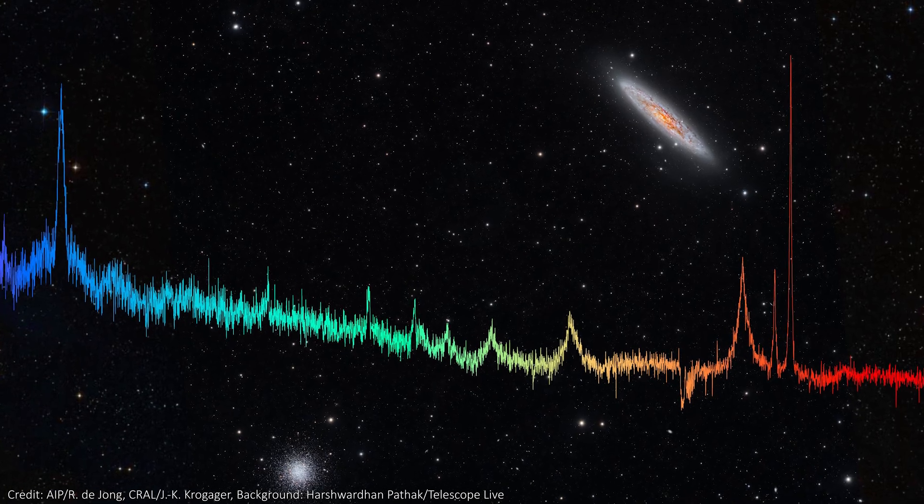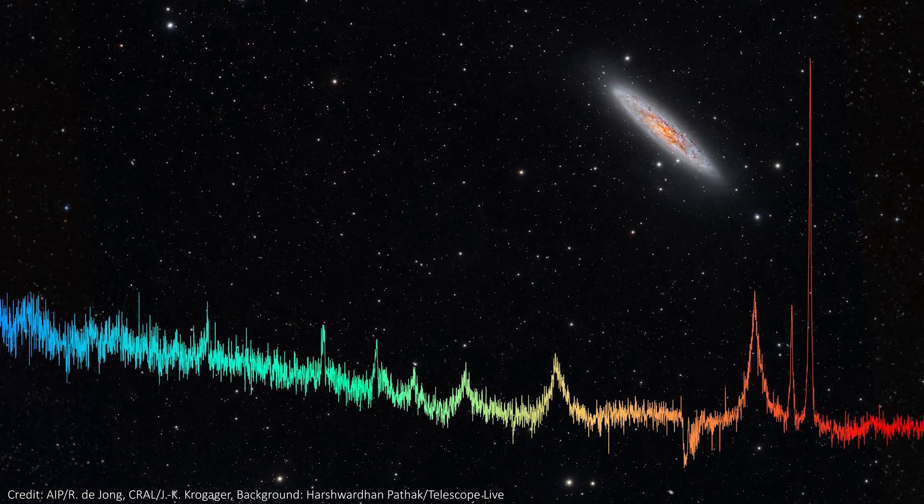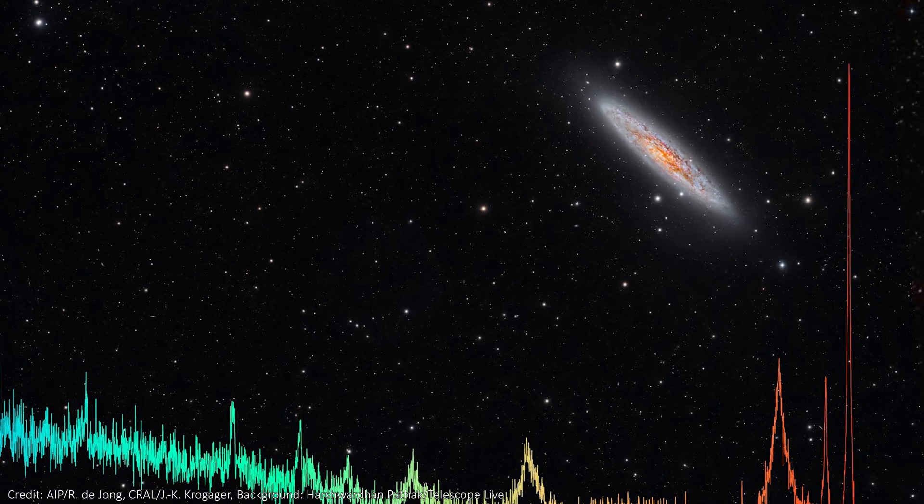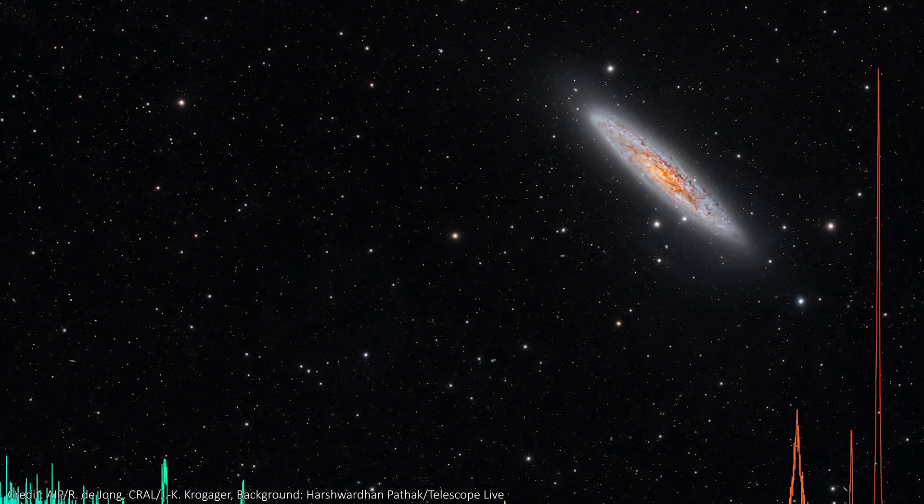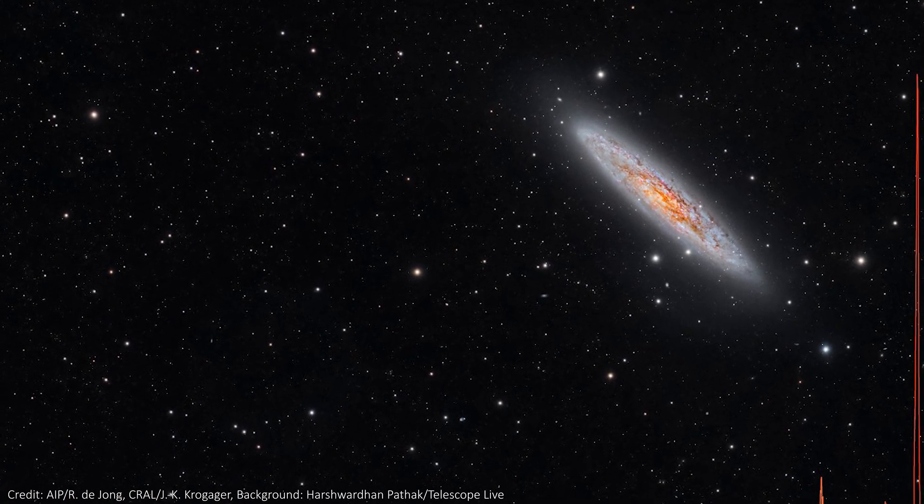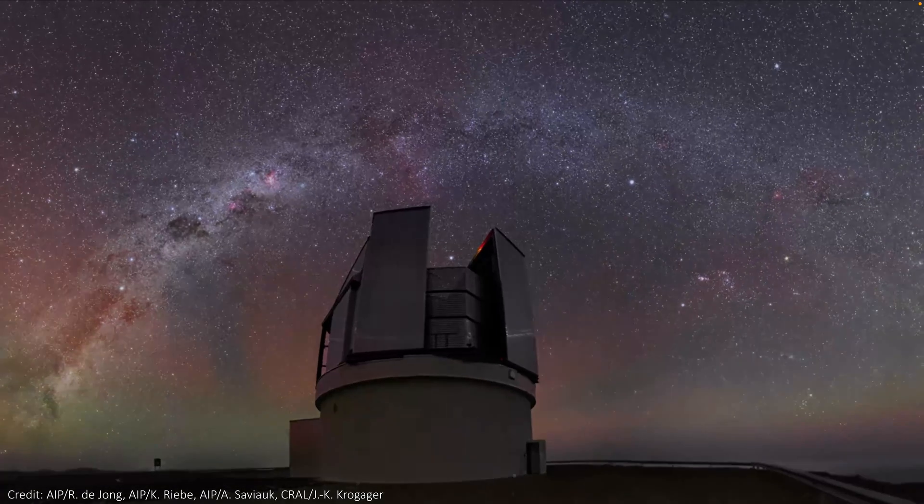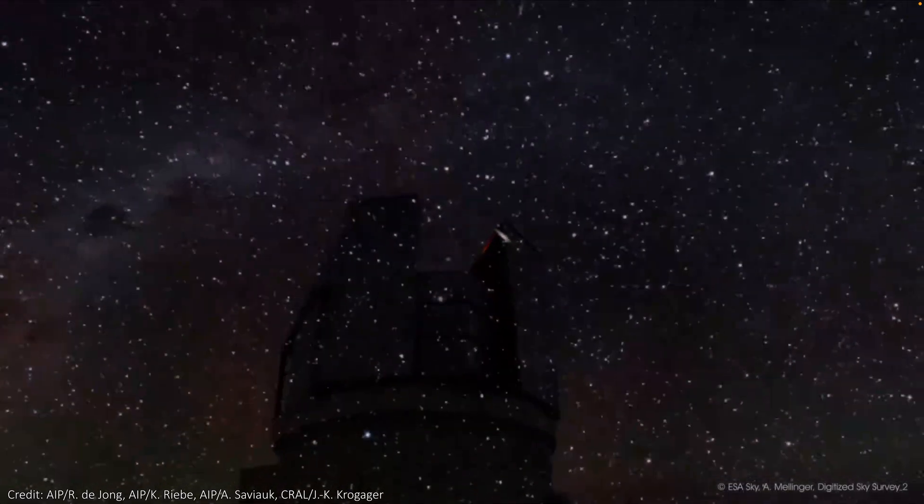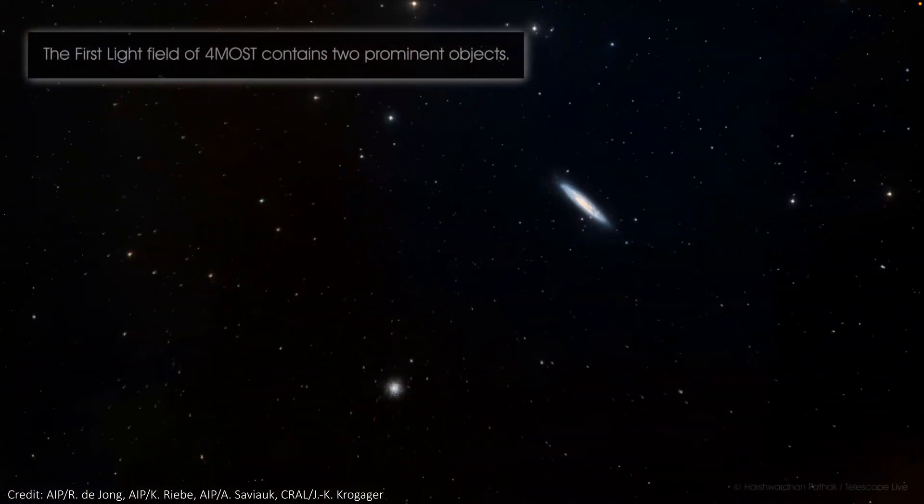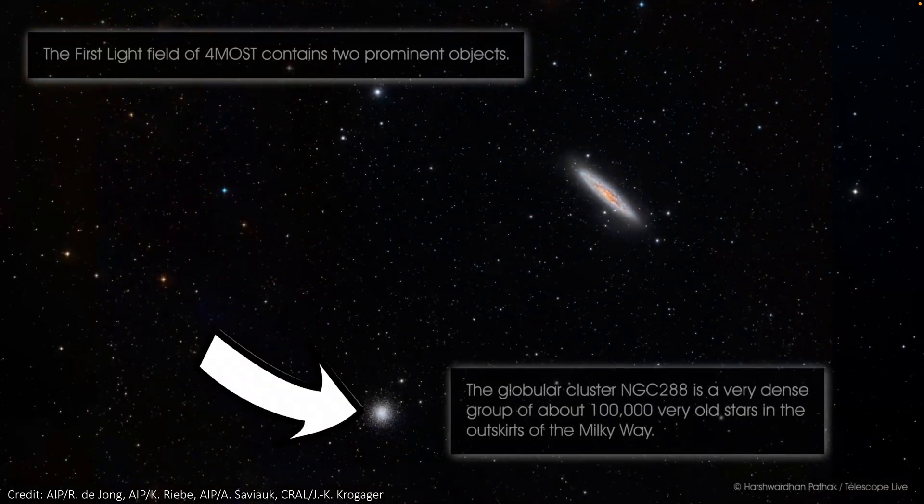This patch was chosen because it contains this really big galaxy called NGC 253, or the Sculptor Galaxy, which, except for the Magellanic clouds that orbit the Milky Way, this is the galaxy that appears the largest in the southern sky. Plus, there are loads of other stars and galaxies and interesting things to put fibers on at the same time. This includes a nice little cluster of stars down here that we'll get to in a second.